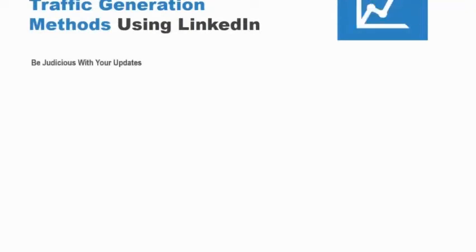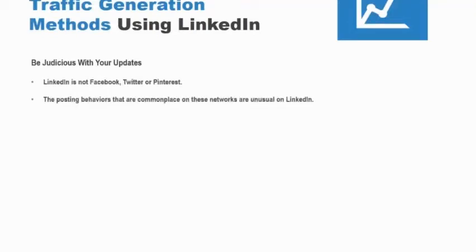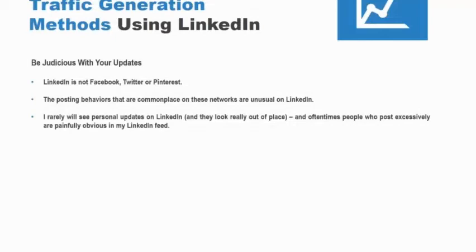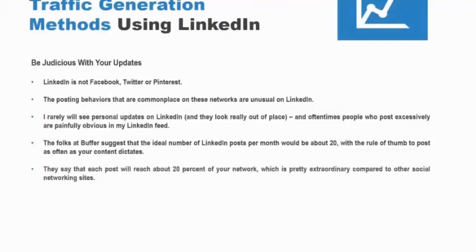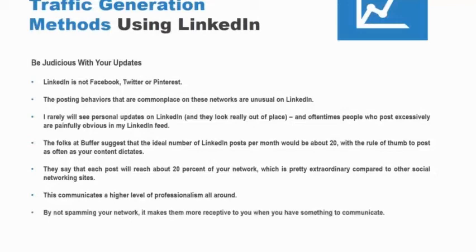Be judicious with your updates. LinkedIn is not Facebook, Twitter, or Pinterest. The posting behaviors that are commonplace on those networks are unusual on LinkedIn. Personal updates look really out of place, and people who post excessively are painfully obvious in your LinkedIn feed. The folks at Buffer suggest that the ideal number of LinkedIn posts per month would be about 20, with the rule of thumb to post as often as your content dictates. They say that each post will reach about 20% of your network, which is pretty extraordinary compared to other social networking sites. This communicates a higher level of professionalism all around — by not spamming your network, it makes them more receptive to you when you have something to communicate.